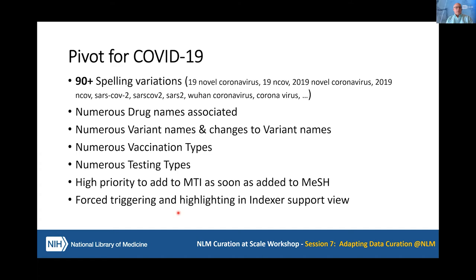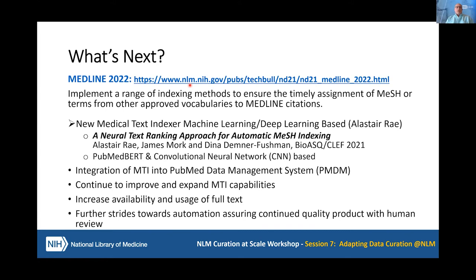Like everyone else, we had to pivot for COVID-19, continually adding new terms as MeSH was adding new terms so that MTI would find them. There was a big struggle early on with the naming of what COVID-19 was going to be. What's coming up next: as part of the MEDLINE 2022 project, we're implementing new indexing methods to ensure timely assignment of MeSH terms. There's a new medical text indexer machine learning program we've been working on for three or four years, and Alistair Ray is getting very good results with that.